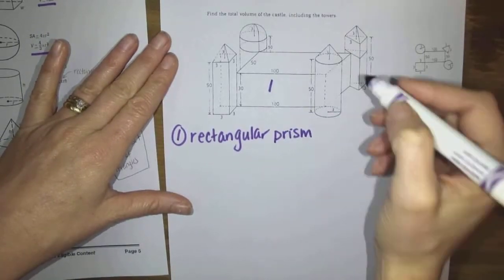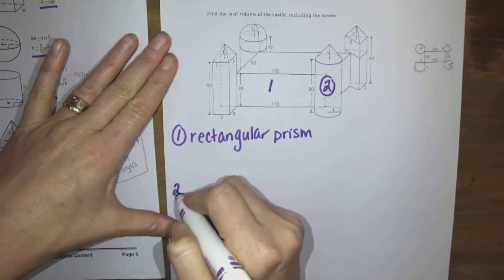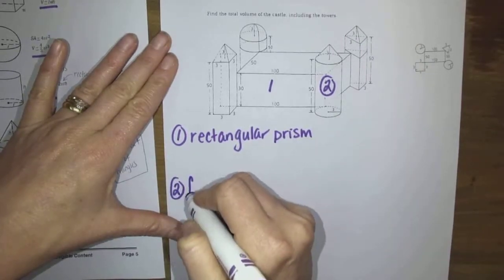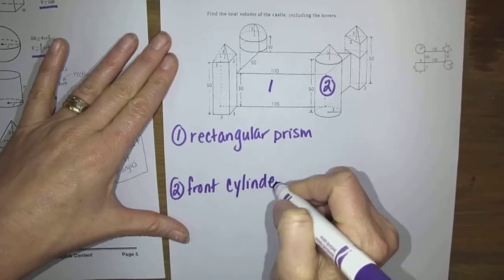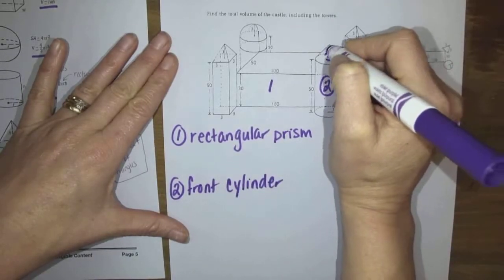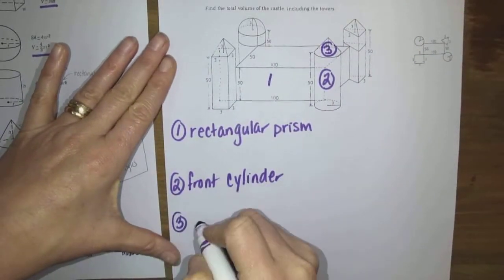Number two, we'll go right here. Number two I'll call that the front cylinder. Number three, I'll put that right on top. Number three would be the cone.